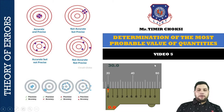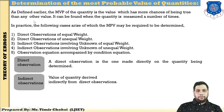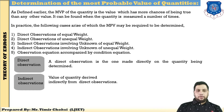I have already explained in a previous session what is the most probable value, but I will repeat the definition. The most probable value of a quantity is the value which has more chance of being true than any other value. It can be found when the quantity is measured a number of times.